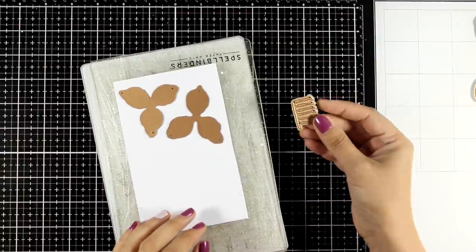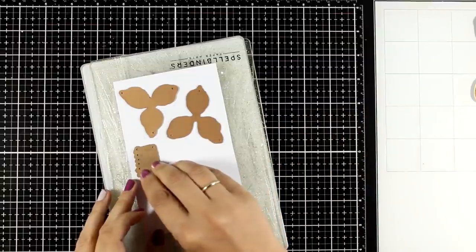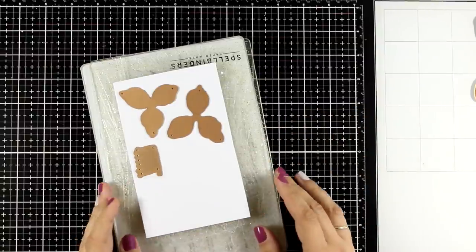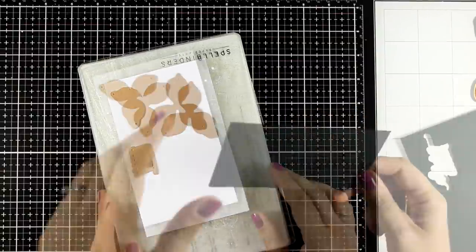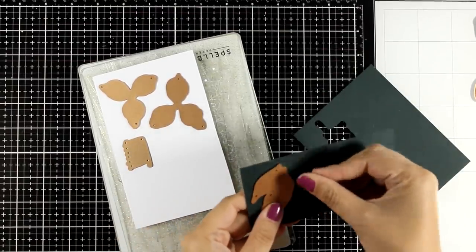So all you have to do is to die cut those petals just once to create one flower. Then you can die cut the stamen die and you can cut out everything from white cardstock like I'm doing here and then you can color everything with your markers.